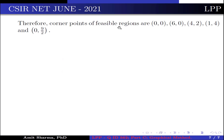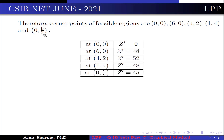Therefore, we evaluate z' = 8y1 + 10y2 at each corner point: at (0,0), z' = 0; at (6,0), z' = 48; at (4,2), z' = 52; at (1,4), z' = 48; at (0, 9/2), z' = 45. We can clearly see that the maximum value is obtained at (4,2) and the maximum value is 52.